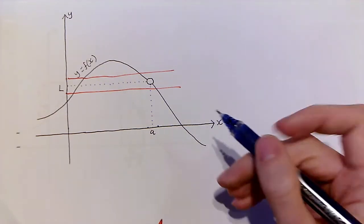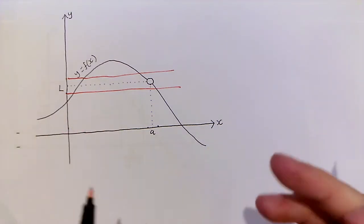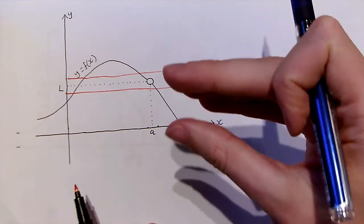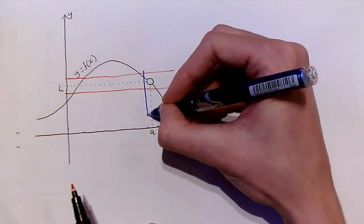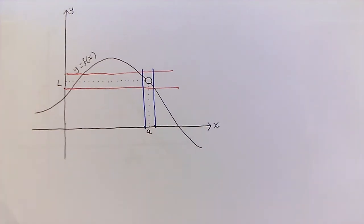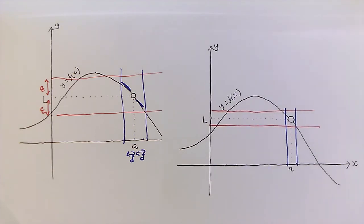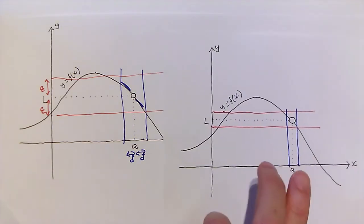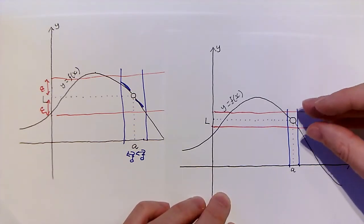Because some of the function values which in the previous example lay within the strip might no longer lie within this narrower strip. We might need to be stricter and take delta to be something like this. The important point about limits is that however tiny we choose epsilon, or however narrow a strip we draw, if we take delta to be small enough, then for all x lying within delta either side of a, but not equal to a,